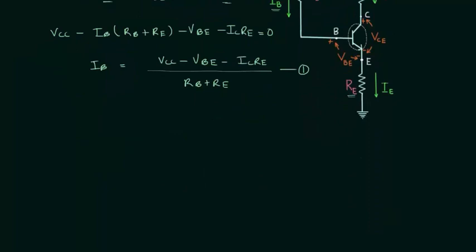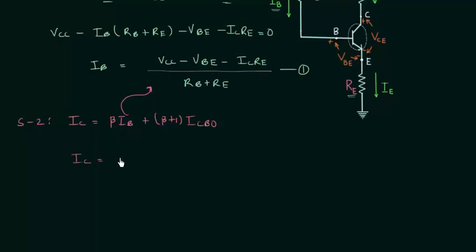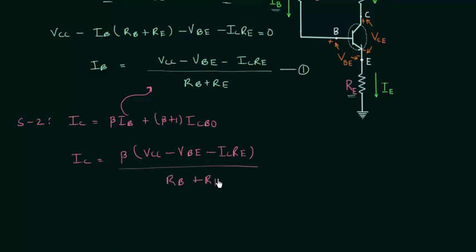In step number two, we will calculate the collector current using the equation: IC equal to β·IB plus (β+1)·ICBO. We have already calculated IB, and once we replace IB with the expression from equation one, we have: IC equal to β·(VCC minus VBE minus IC·RE) divided by (RB plus RE) plus (β+1)·ICBO.